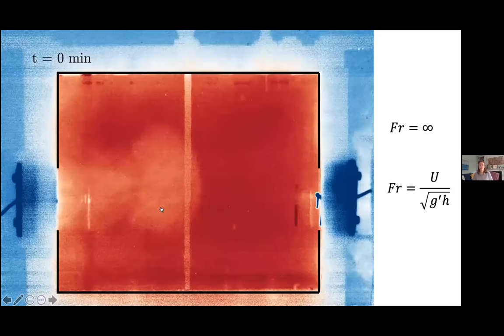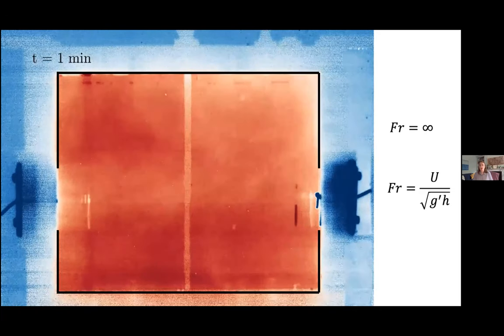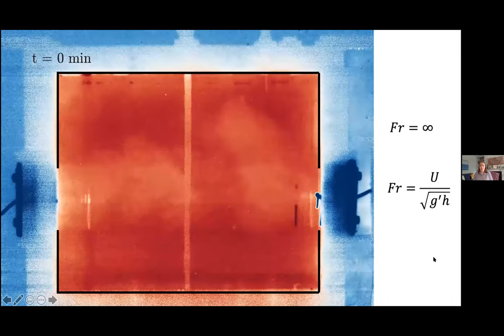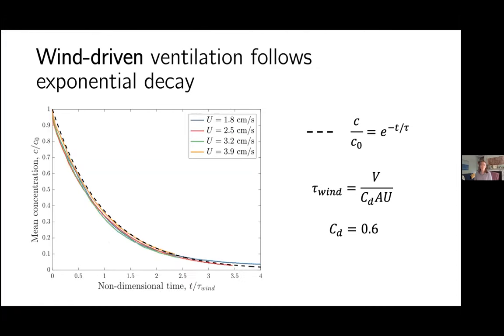The last example is what happens with just wind and no temperature difference between inside and outside. In this case we essentially remain well-mixed throughout — just a well-mixed interior that gradually decreases in concentration. The well-mixed case is straightforward: it's just an exponential decay. Rescaling the mean concentration by the initial concentration and time by the wind timescale — given by the volume of the room divided by cd times A times u — gives a very good fit to that model.